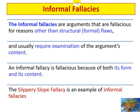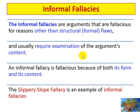In contrast to formal fallacies, informal fallacies are arguments that are fallacious for reasons other than the form or structure — they are fallacious because of the content. They usually require examination of the argument's content itself rather than its structure. The slippery slope fallacy is an example of an informal fallacy because it is fallacious because of the content, not the form.